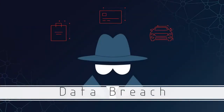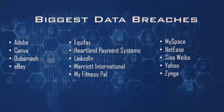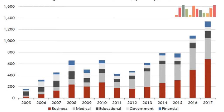Next is data breach. A data breach is an incident that exposes confidential or protected information. A data breach might involve the loss or theft of your social security number, bank account or credit card numbers, personal health information, passwords, or email. Here are some of the biggest data breaches in the last few years, along with a graph showing data breach trends, so you can get a sense of how much cyber security we need.